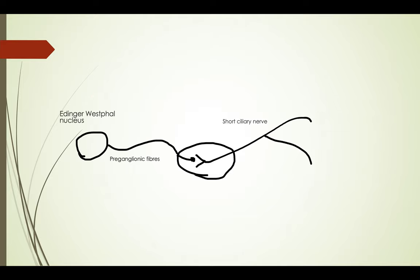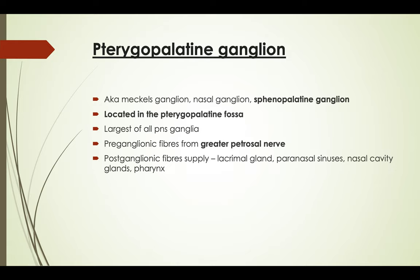Here is a diagram to help remember: the Edinger-Westphal nucleus gives rise to pre-ganglionic fibers that travel to the ciliary ganglion, synapse with a post-ganglionic fiber, and the post-ganglionic fibers travel via the short ciliary nerve to supply the sphincter pupillae and the ciliaris muscles. That covers the ciliary ganglion.